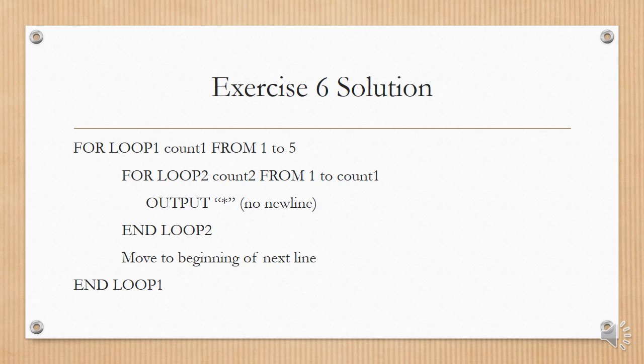We have a for loop, count one from one to five. And the inner loop will count from one to count one, which is the outer loop's number. So we will then output stars, as many stars as count one is, and then end the loop. Every time we end the loop, loop two, we move to the beginning of the next line, and then we end loop one. This is just a nice example of a nested for loop.